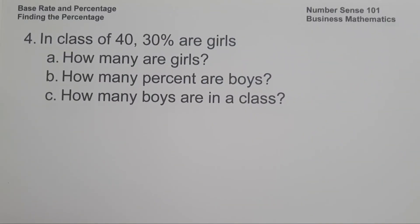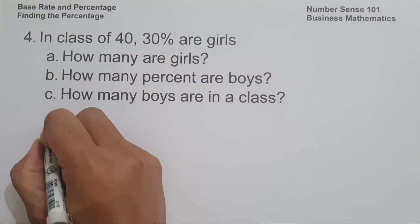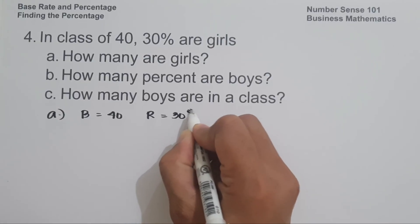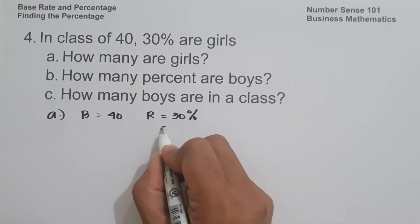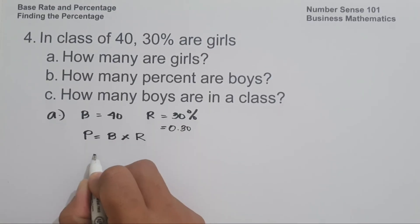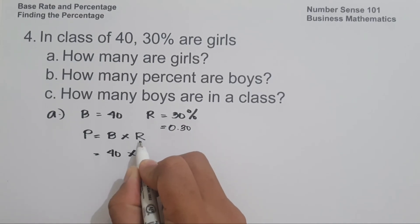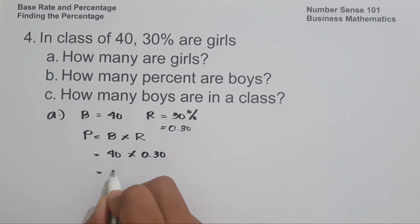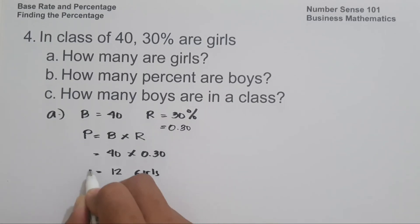On example number 4: In a class of 40, 30% are girls. For letter A — how many are girls? The base is 40 and the rate is 30% or 0.30 in decimal. Using P = B × R, we get 40 times 0.30, which equals 12. So 12 is the number of girls in the class.